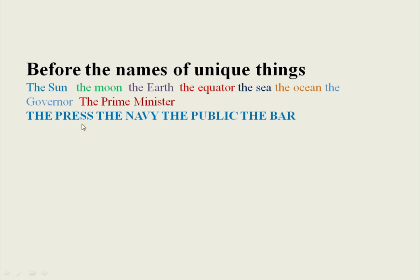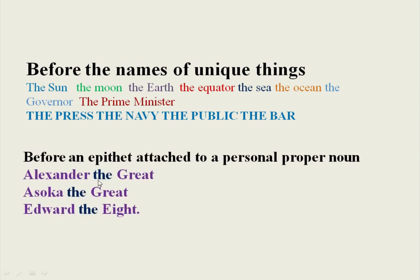We use the definite article before words like press, navy, public, and bar: 'the press,' 'the navy,' 'the public,' 'the bar.' We also use the definite article before an epithet attached to a personal proper noun. For example: 'Alexander the Great' — 'Alexander' is a personal proper noun, while 'the Great' is an epithet. Similarly, 'Ashoka the Great' and 'Edward the Eighth' — we use 'THE' before the epithet attached to the proper noun.